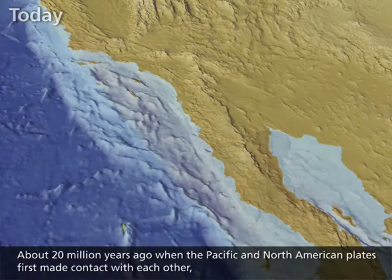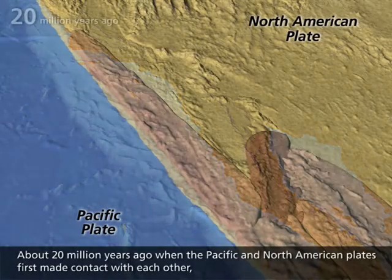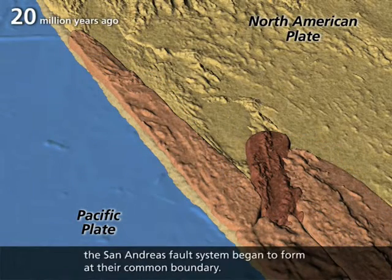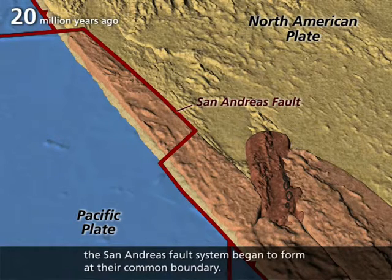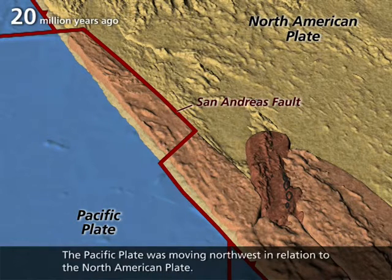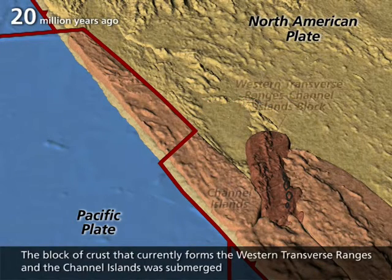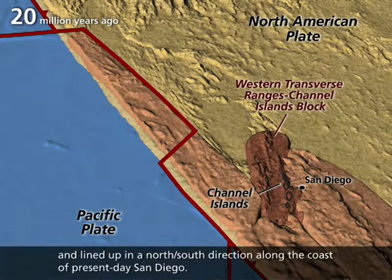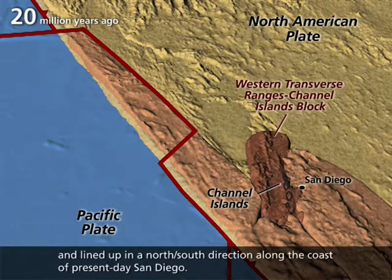About 20 million years ago, when the Pacific and North American plates first made contact with each other, the San Andreas fault system began to form at their common boundary. The Pacific plate was moving northwest in relation to the North American plate. The block of crust that currently forms the western transverse ranges and the Channel Islands was submerged and lined up in a north-south direction along the coast of present-day San Diego.